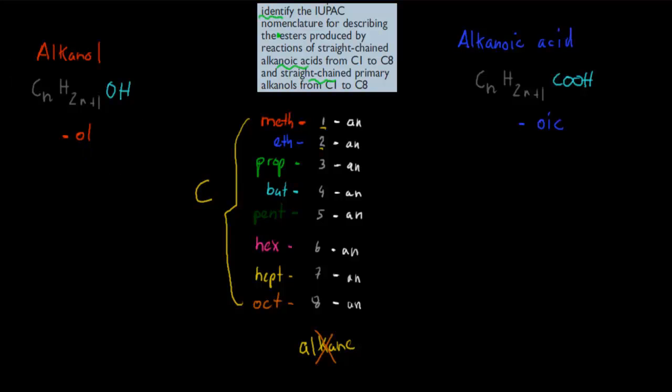So in this case, for example, let's say we have one carbon, we call it methanol. If we had two carbons, we would call it ethanol. Three carbons would be propanol, four carbons would be butanol. So that's the idea behind it. Just the only difference between naming alkanes and alkanols is the ol part at the end.